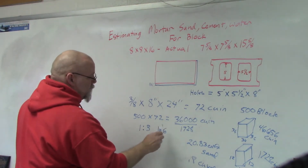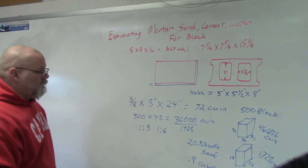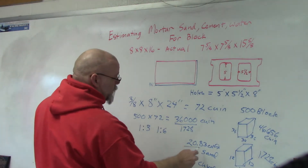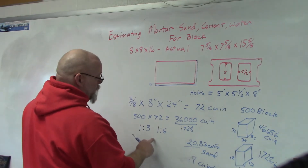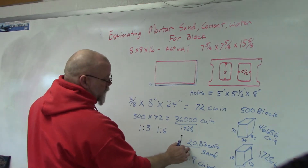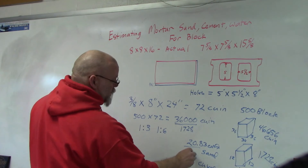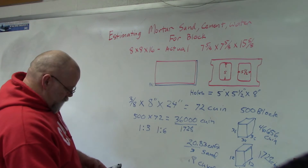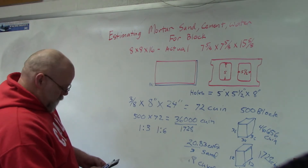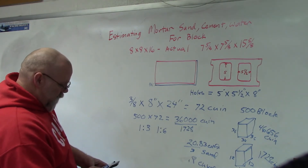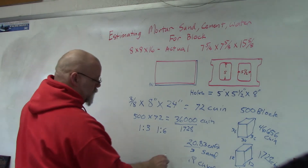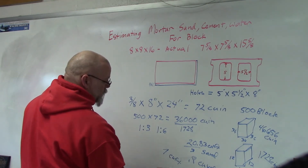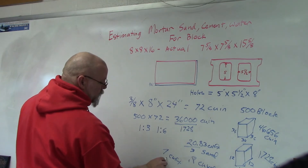For a facade, you can go as high as one to six in the ratio. All you have to do is take your sand number and divide by either three, four, five, or six — whatever you're going to use. Let's say this is going to be a load-bearing wall, so we divide by three: 20.83 divided by three gives us 7 cubic feet of cement.